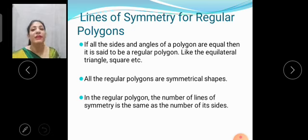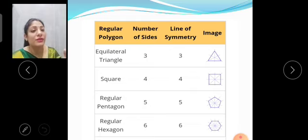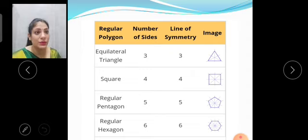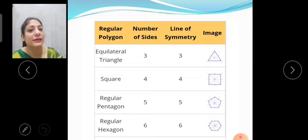For example, if I am talking about an equilateral triangle, then it has three sides. So the number of lines of symmetry will also be three. The table is given to us. Regular polygon, equilateral triangle, the number of sides are three, line of symmetry is also three and you can see the image also. In the square, number of sides are four. So line of symmetry will be also four as you can see in the figure.